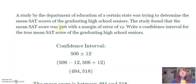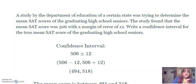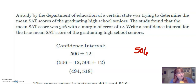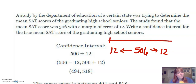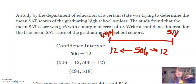So what we believe is that the mean score is about 506, but we have a margin of error of 12, which means the actual mean may be 12 less or 12 more than what we thought. So all we have to do to write our confidence interval is take 506, add 12, and subtract 12. We're saying it's very likely that our actual mean for all graduating high school seniors — our entire population, not just our sample — is somewhere between 494 and 518.